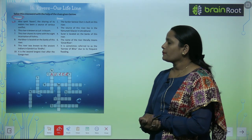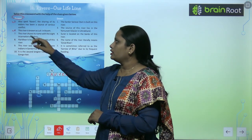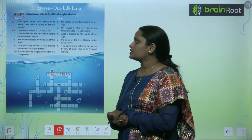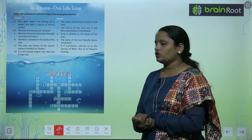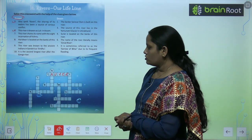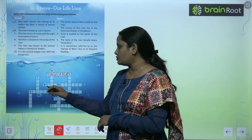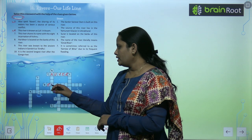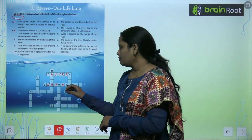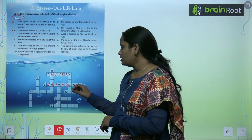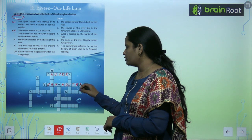Next, this is number 5 across. This river is known as Lirt in Assam — is ko Assam mein Lirt kehte hain. So here in number 5 across, we have to write Brahmaputra — B-R-A-H-M-A-P-U-T-R-A. Brahmaputra.